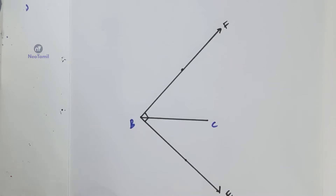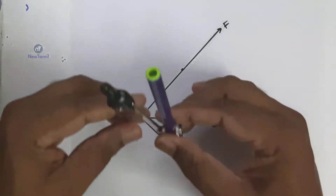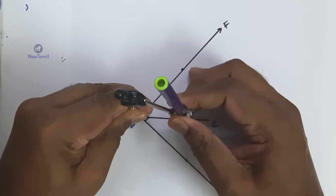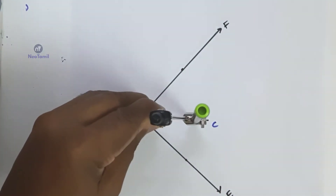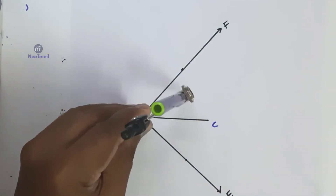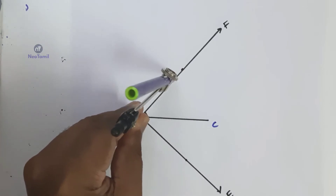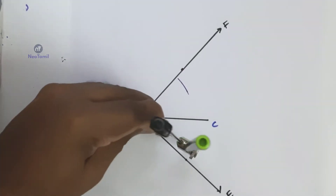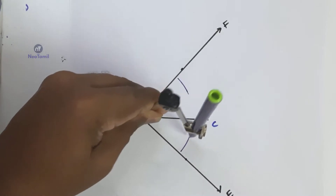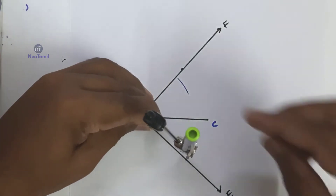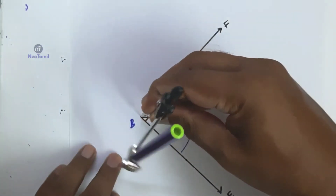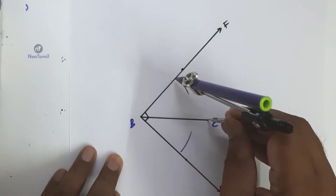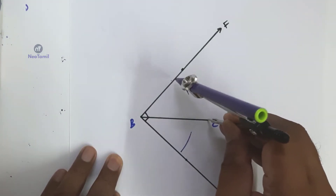Next, we are going to draw the perpendicular bisector for BC. Take more than half of the BC length — about 75%. Draw one arc above and one arc below from B, then using the same measurement from C, draw one arc above and one arc below.